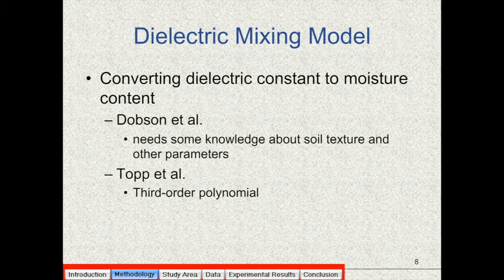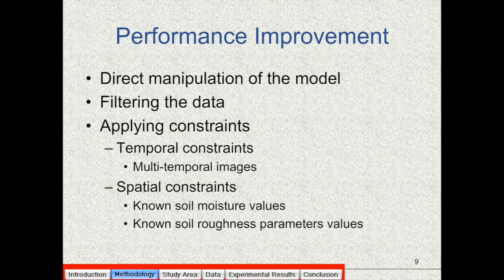So the IEM and other backscattering models used for estimation of soil moisture, their output contains error like any model used for describing some natural phenomenon. For improving the performance of these models, different methods have been proposed such as direct manipulation of the model for removing some approximations and simplifications, filtering the data, decomposing the signal before the data is fed into the model, or applying some constraints like temporal constraints or spatial constraints during the inversion process.